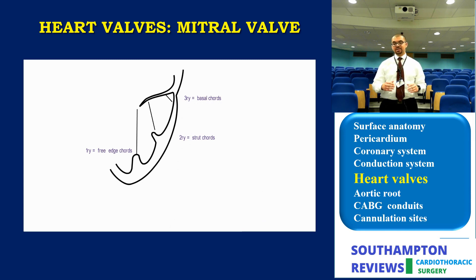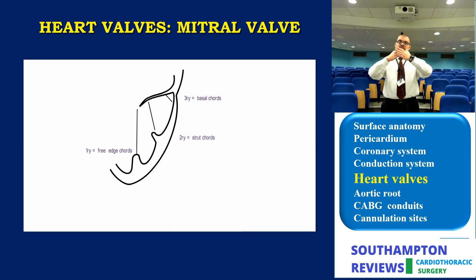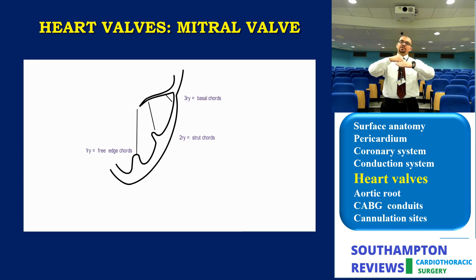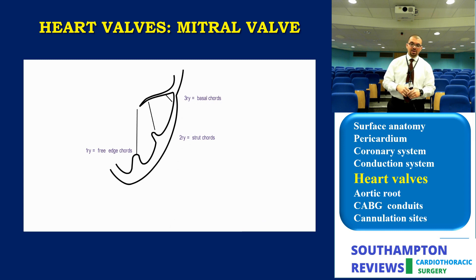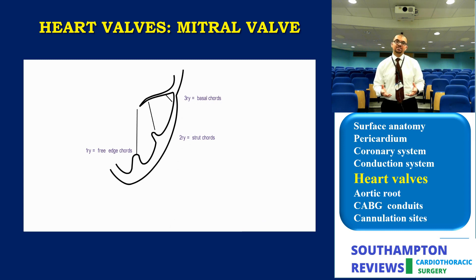Flail leaflet is when the tip of the leaflet travels all the way up into the atrium. To summarize: prolapse is the tip of the leaflet traveling upwards towards the atrium; billowing is the body of the leaflet going above the level of the annulus; and flail is the tip going all the way up. Understanding these distinctions is important for understanding the subvalvular apparatus and the functions of the different cords.